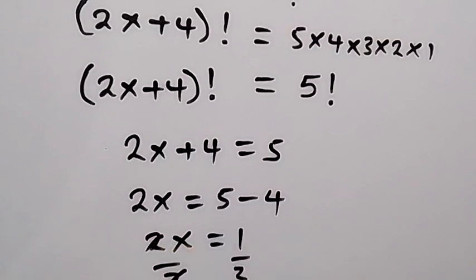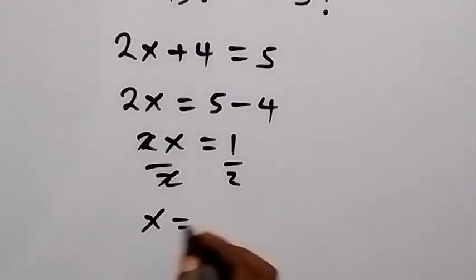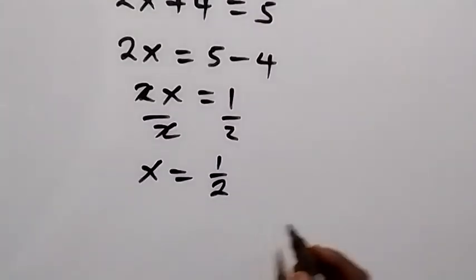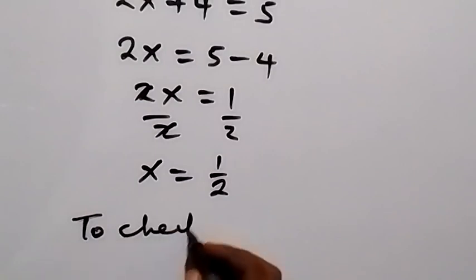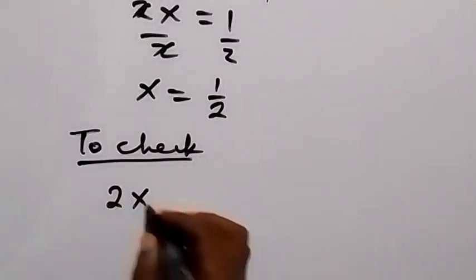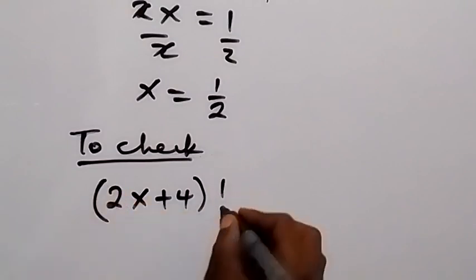Dividing by 2, we have x equals to 1/2, which is also equals to 0.5. Now to check: (2x+4)! = 120. Let's put the value of x from here, so we have 2 multiplied by 1/2.